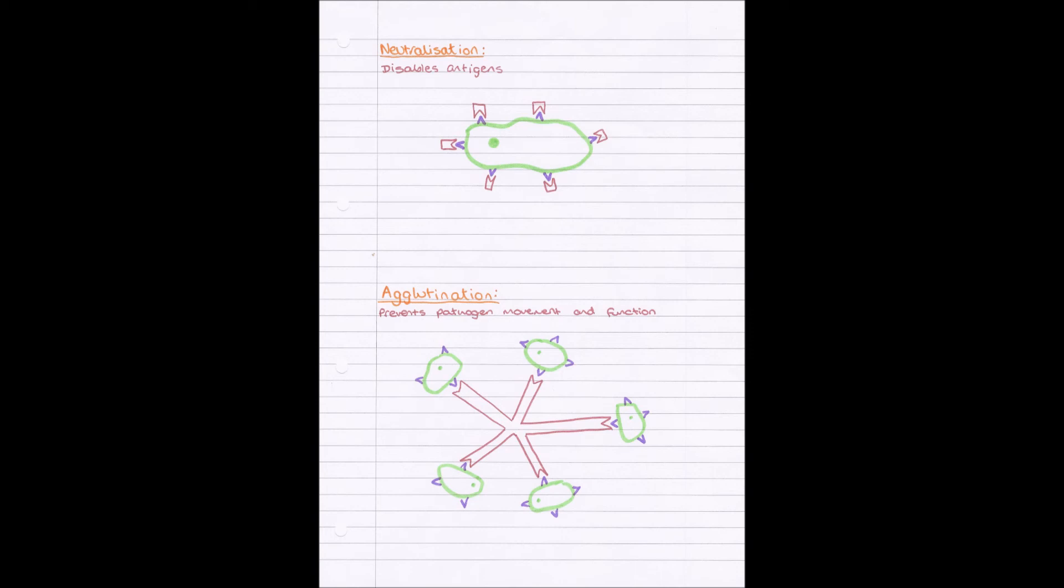So we've got our antigen, purple triangular, green pathogen, and the antibody, one of the brown parts, binding to that antigen. And what this does is this essentially kind of sticks all of the pathogens together and disables their individual movement.